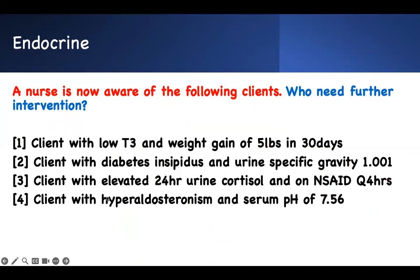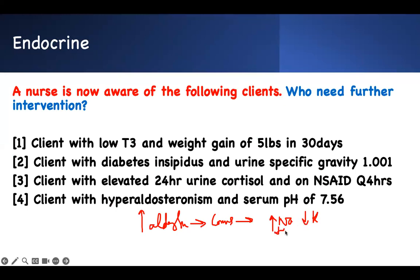The last client has hyperaldosteronism — elevated aldosterone — which is Conn's disease. Aldosterone retains sodium and water, and causes potassium to be excreted. As water follows sodium and potassium is lost, the body tries to compensate. There is more potassium inside the cell than outside, leading to hypokalemia. The body then shifts potassium out of the cell and into the serum to correct this.